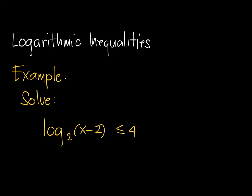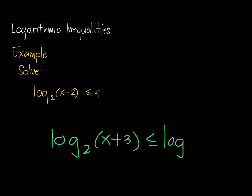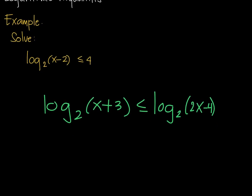In this video, I'm going to show you another example of solving logarithmic inequalities. This type is the one with a logarithm on one side and a number on the other side. This is different from the typical case where we have something like log base 2 of x plus 3 less than or equal to log base 2 of 2x minus 4, where we have a log on both sides.